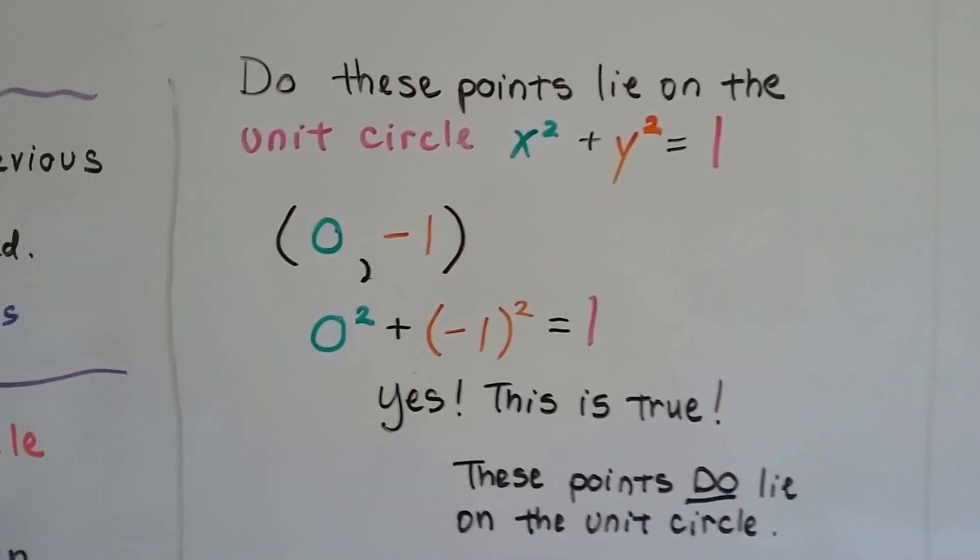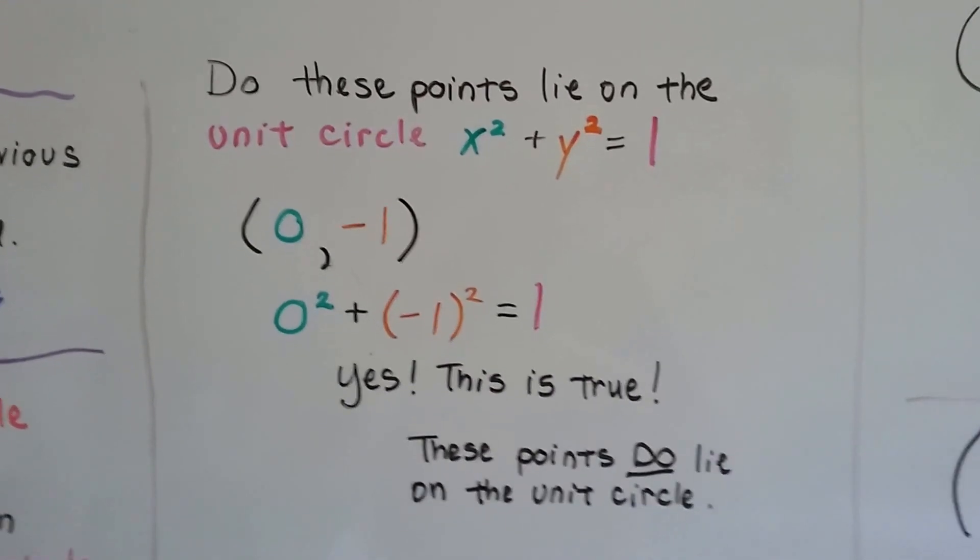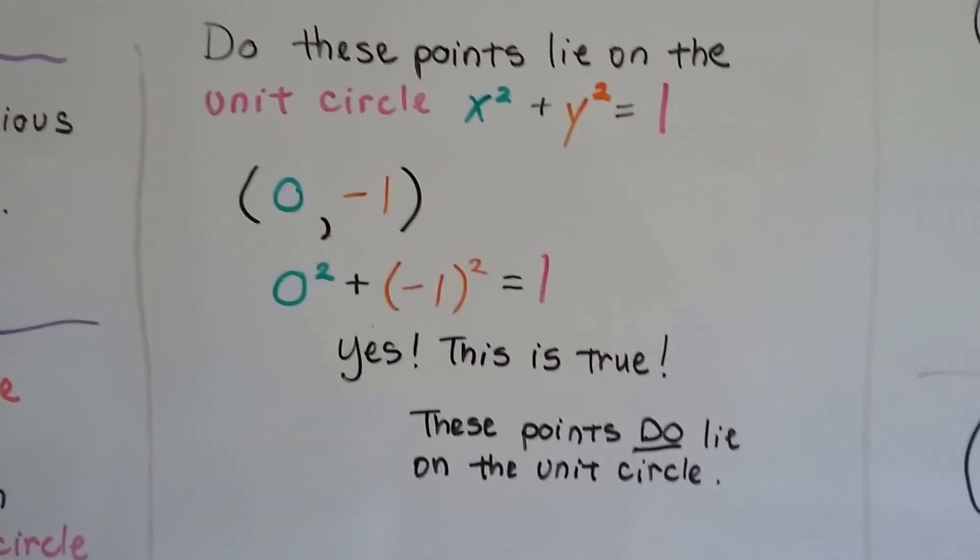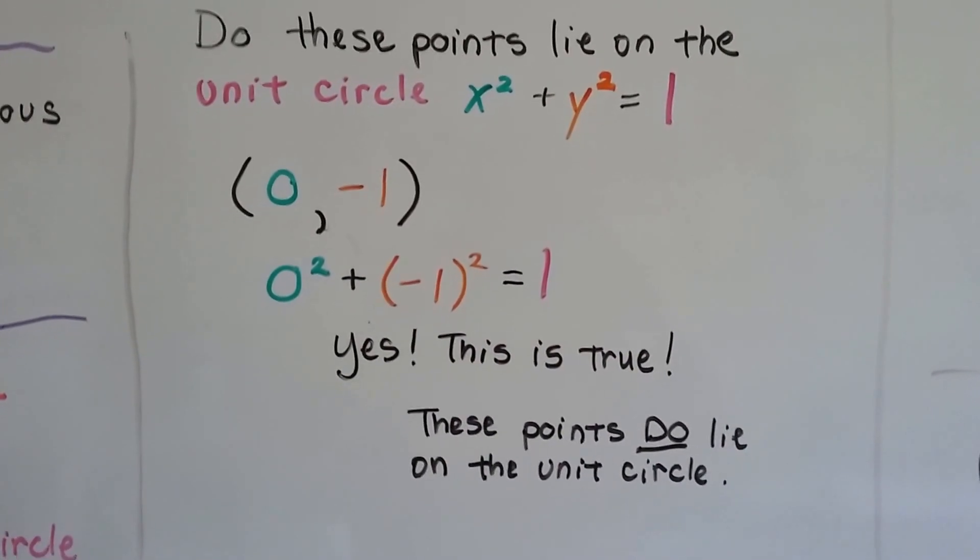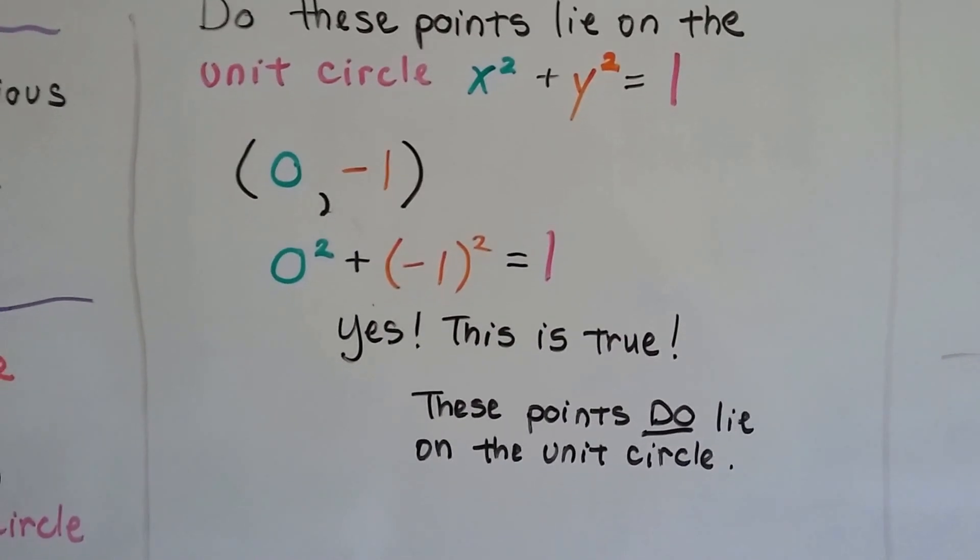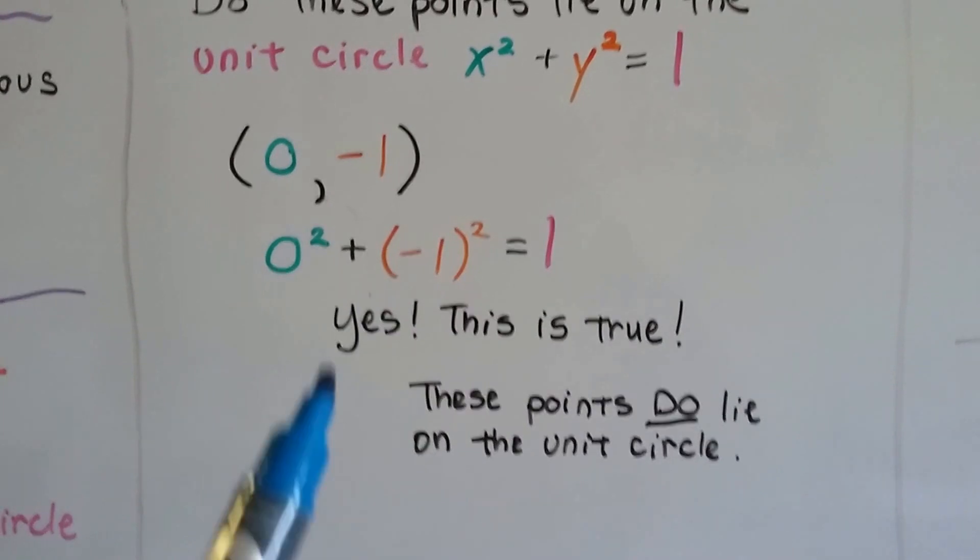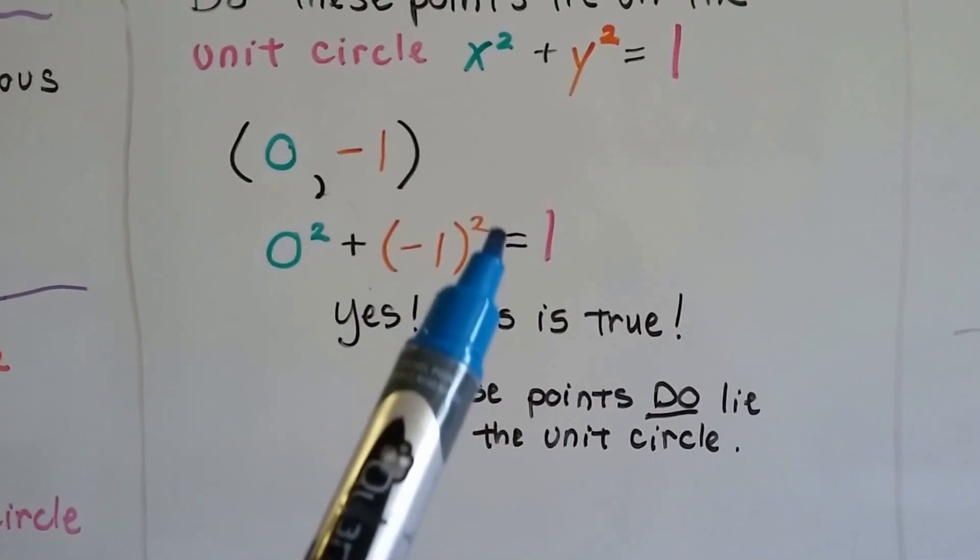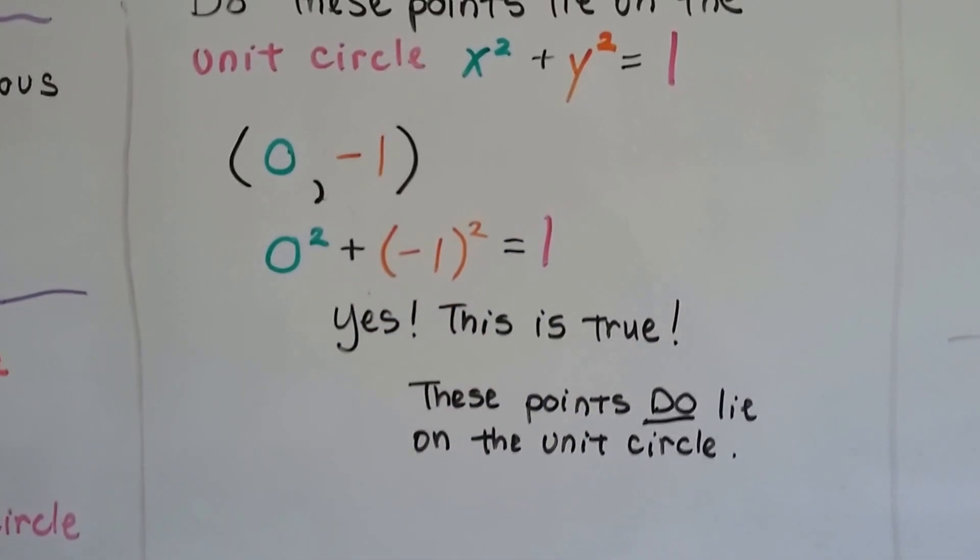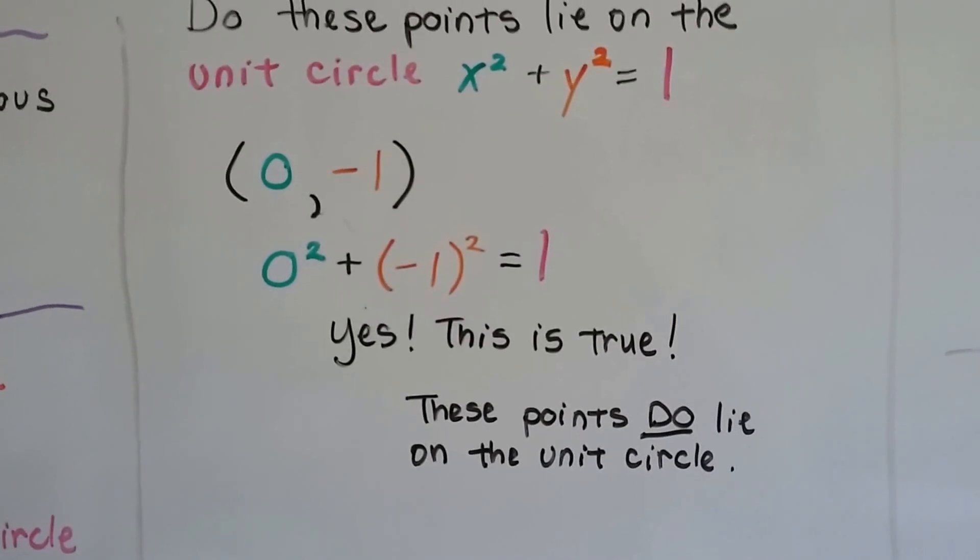So do these points lie on the unit circle? We're going to use that equation. We've got the points 0 and negative 1. We just substitute them into the equation, so that means we have 0 squared plus negative 1 squared. Negative 1 times negative 1 is a positive 1, so yeah, it's true. These points do lie on the unit circle.